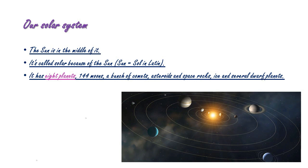Our solar system. The sun is in the middle of it. It's called solar because of the sun - Sun equals Sol in Latin. It has eight planets, 144 moons, a bunch of comets, asteroids and space rocks, ice and several dwarf planets.